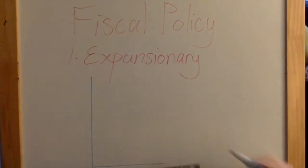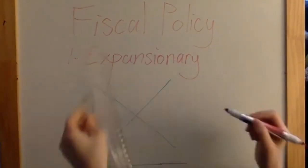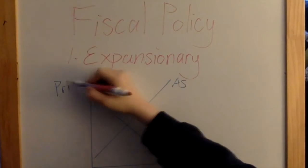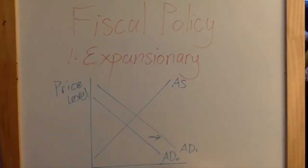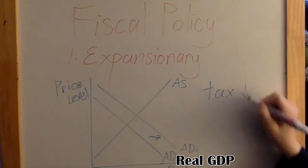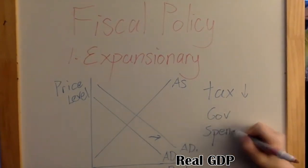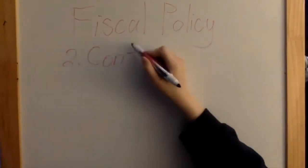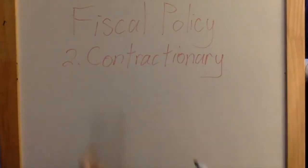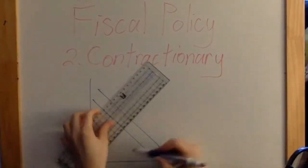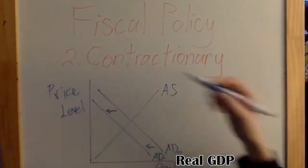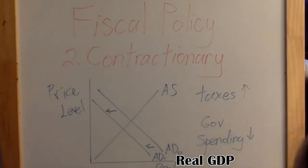Expansionary fiscal policy is aimed to stimulate economic growth. The government will decrease taxes and increase spending, causing C, I, and G to increase. And when components of AD increase, AD will shift outwards. Contractionary fiscal policy is the opposite — the government will increase taxes and decrease spending in order to decrease AD. It's aimed to contract the economy when there's overgrowth.